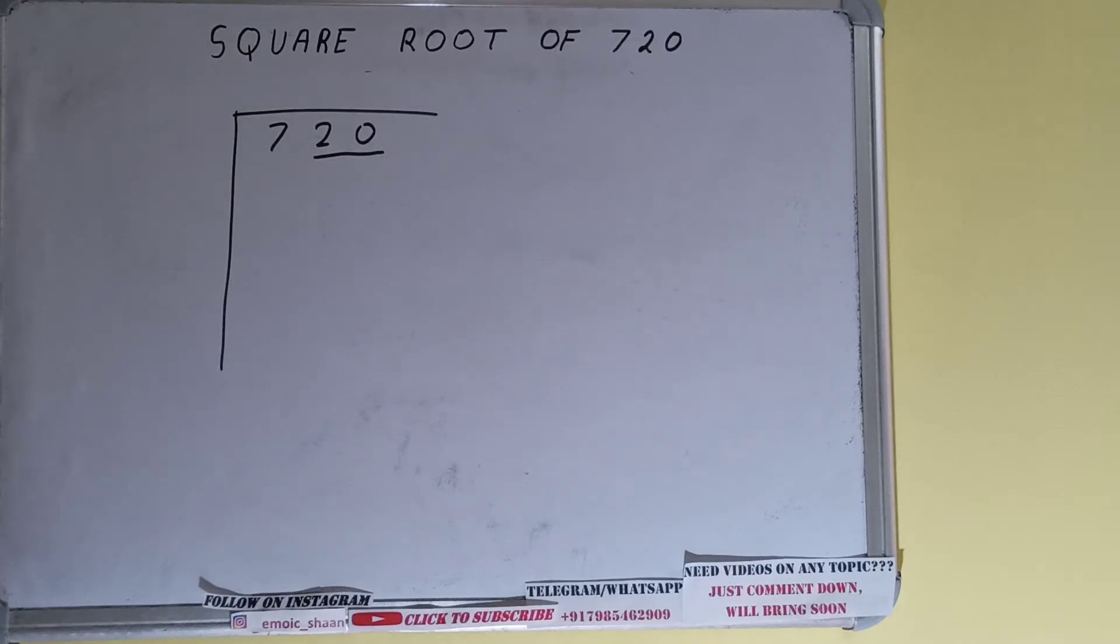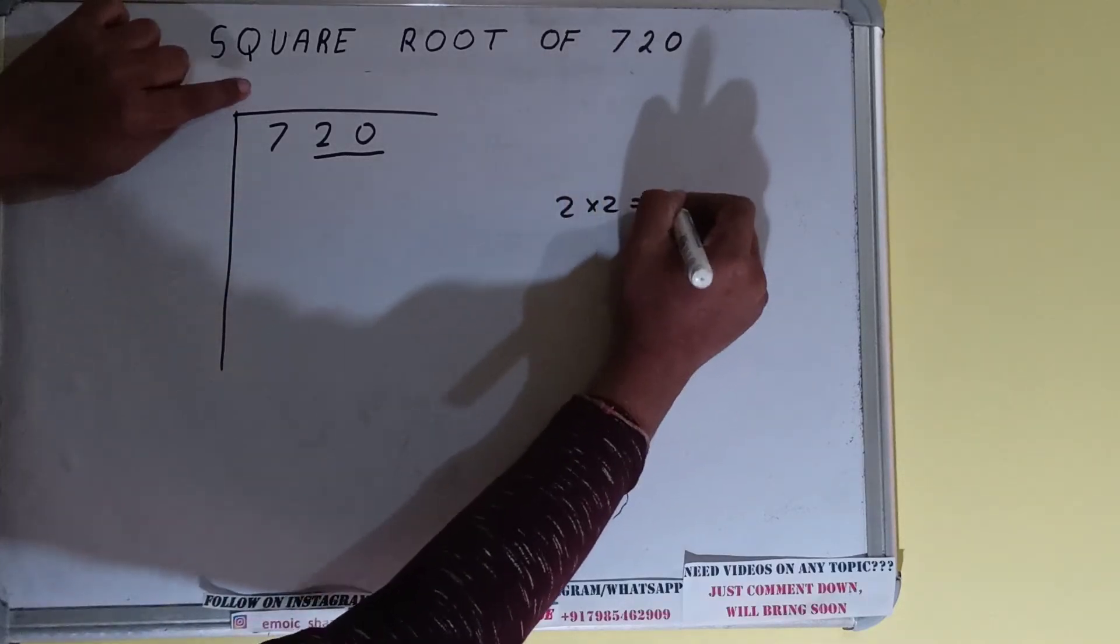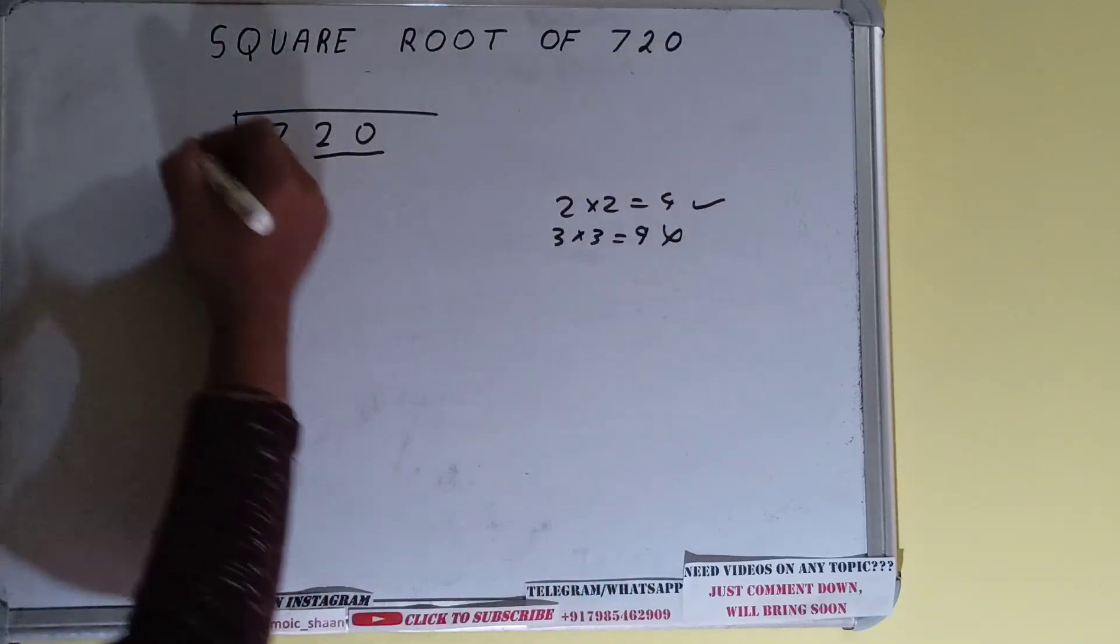The rule is whatever number we write here we have to write here also. So if we write 2 here and 2 here it will give 4. If we write 3 here and 3 here it will give 9. 9 we cannot use because it is greater than 7, so we have to use this 4. So 2 here and 2 here will give 4.